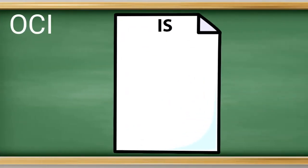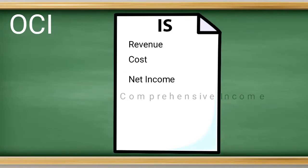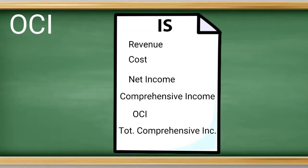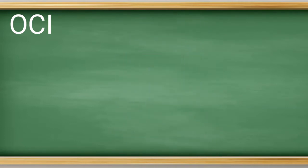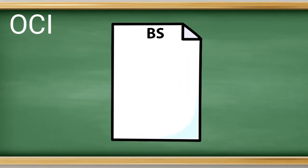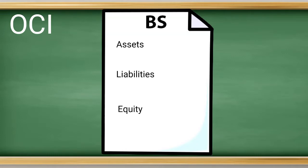Let's start with where OCI is located on the financial statements. Comprehensive income is a more expansive view of net income. OCI is below the company's normal operations on the income statement, and therefore it is our standard net income and OCI that equal our total comprehensive income. On the balance sheet, it can be seen under equity, where the balance of accumulated other comprehensive income is held and fluctuates from quarter to quarter until those amounts are realized.